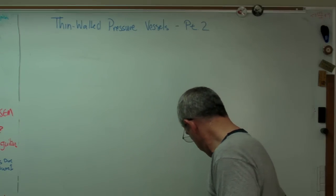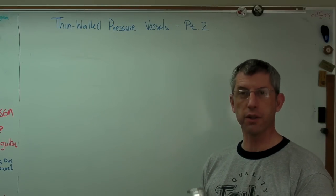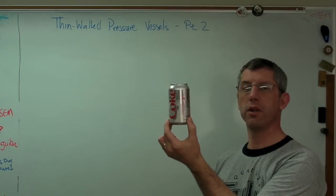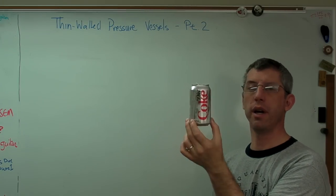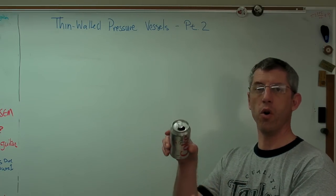In the time since I made the other video, I came up with some more examples of pressure vessels. Here's the ubiquitous Coke can. I drink probably too much Diet Coke, but there's a Coke can. It's pressurized when I buy it, and then when I open it, of course, it relieves the pressure.